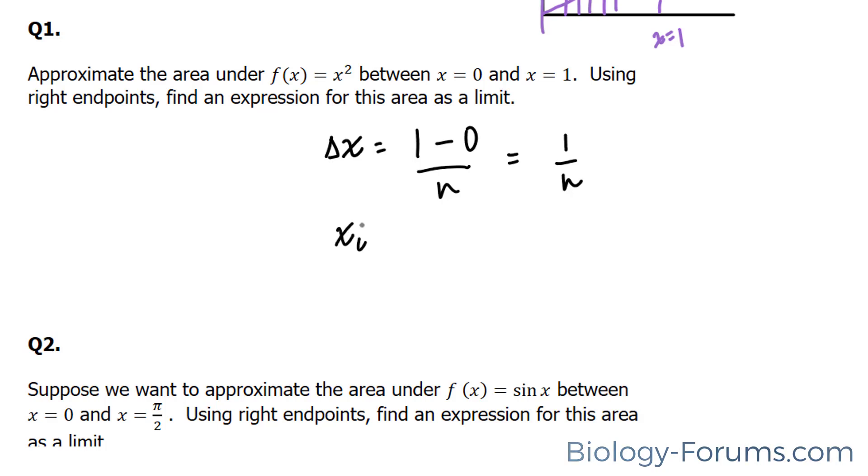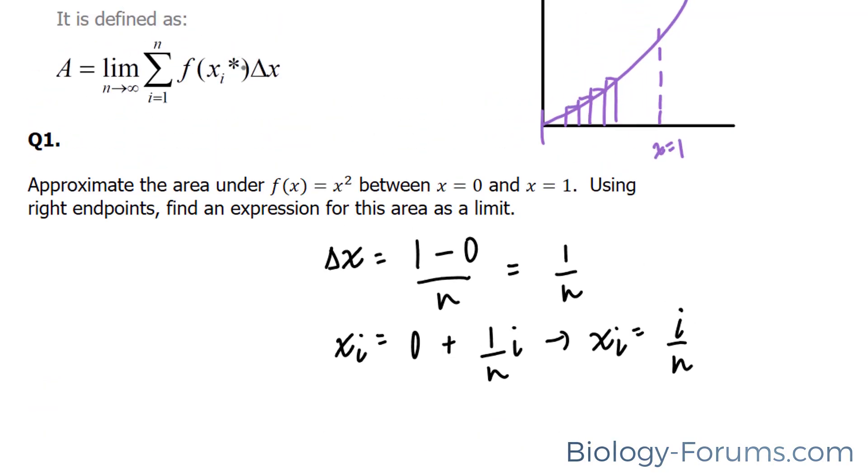Now we're going to need to find x initial. And the way we do that is we take this number and we add it to 0. So 0 plus 1 over n. Now keep in mind that it's supposed to be this times i. So your x initial is equal to i over n. And this will represent your x when you apply it to this definition.